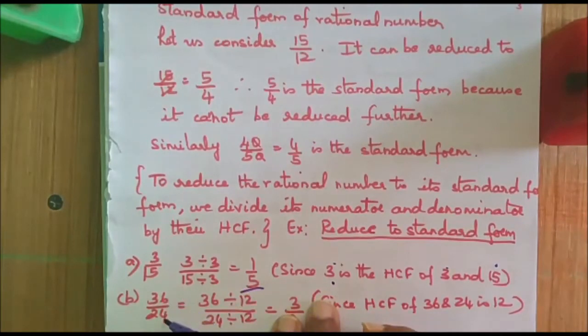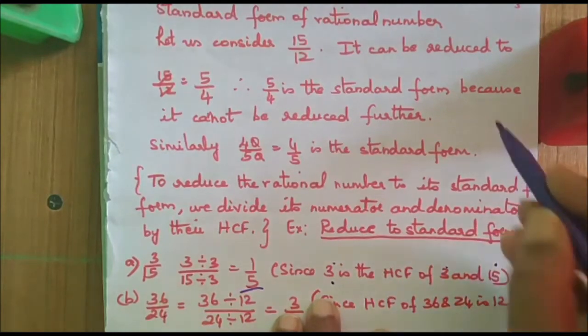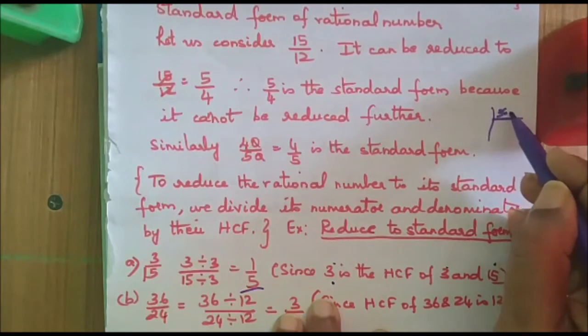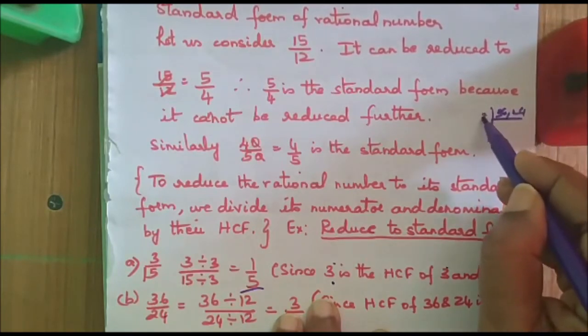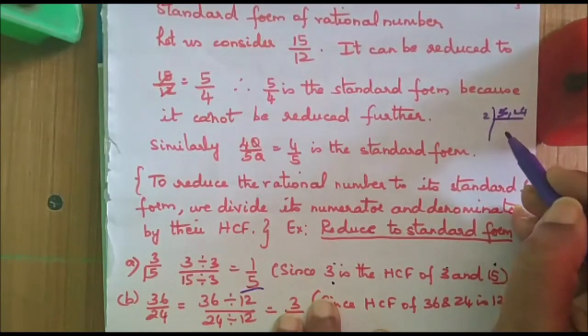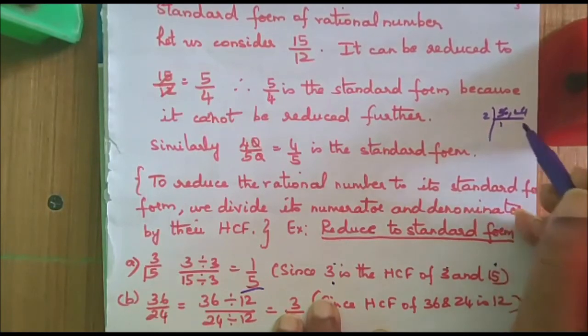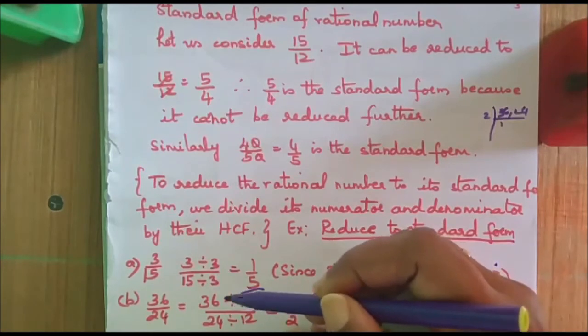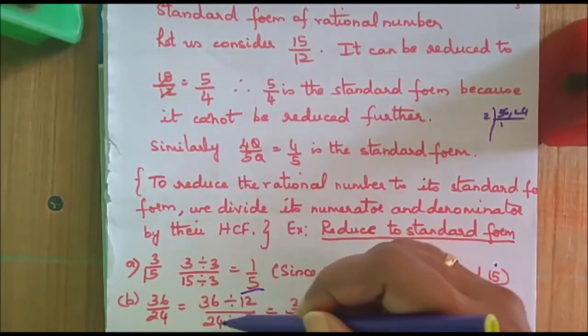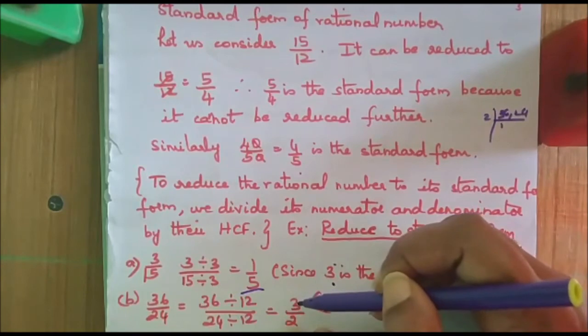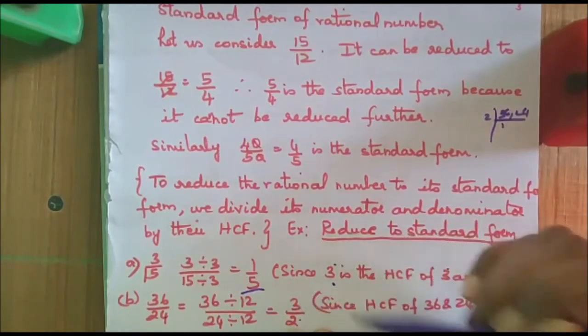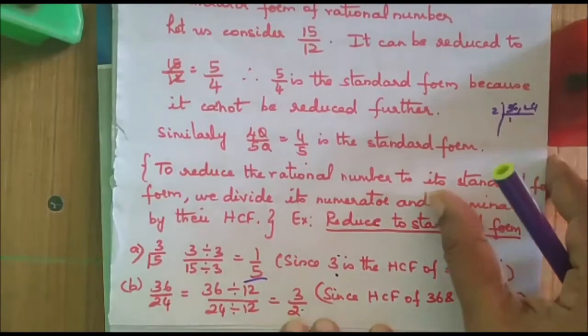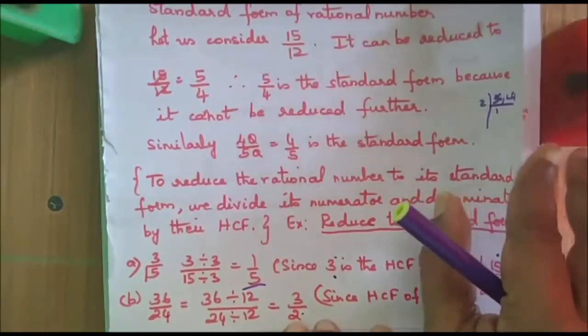Similarly, for 36 and 24, let us find the HCF of 36 and 24. You keep on dividing, you will get the answer. When I do it, 12 is the answer. So, 36 divided by 12 and 24 divided by 12 will give me 3 by 2. So, 3 by 2 is the standard form. I hope you understood this.